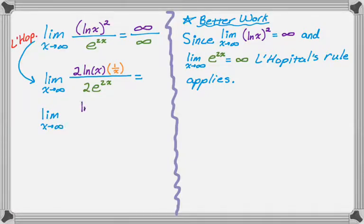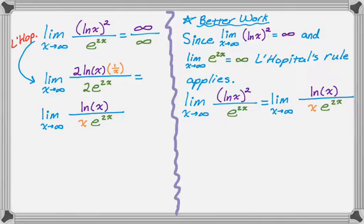The twos cancel. Natural log of x stays in the numerator. That one over x, I'm going to bring the x to the denominator, which is why I color coded it orange. And then e to the two x is still there. In my more formal work, having applied L'Hopital's rule, I would now write that the limit as x approaches infinity of the original is equal to the limit as x approaches infinity of having applied L'Hopital's rule, the natural log of x over x e to the two x.